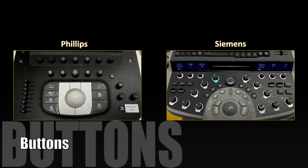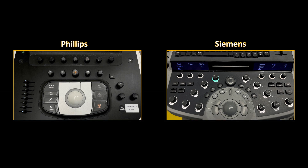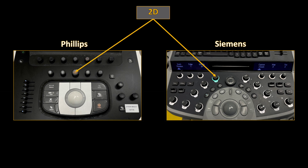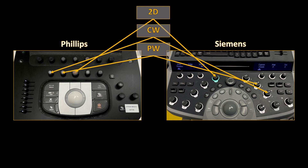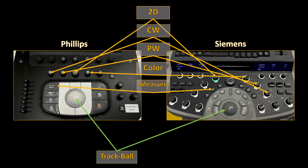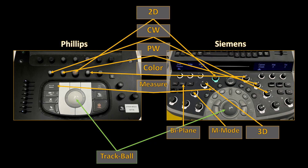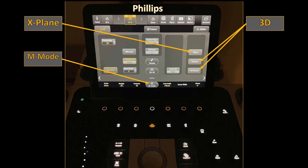The buttons on the Phillips and Siemens machines are aesthetically different but functionally very similar. The main ones include 2D grayscale imaging, continuous wave Doppler, pulse wave Doppler, color Doppler, the trackball, and measurement tool. We also use biplane, M-mode, and 3D, which are found on the touch screen of the Phillips machine.